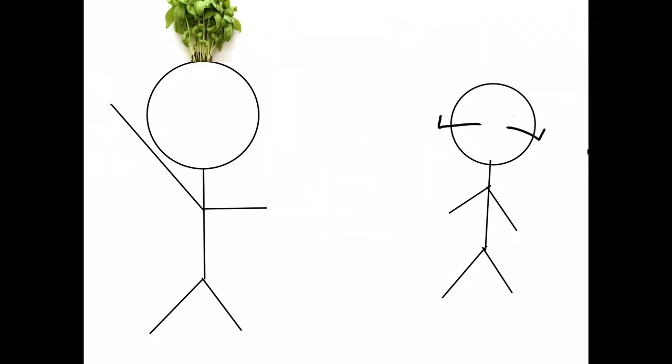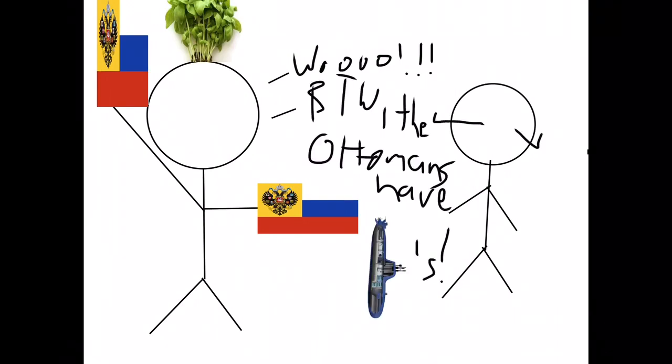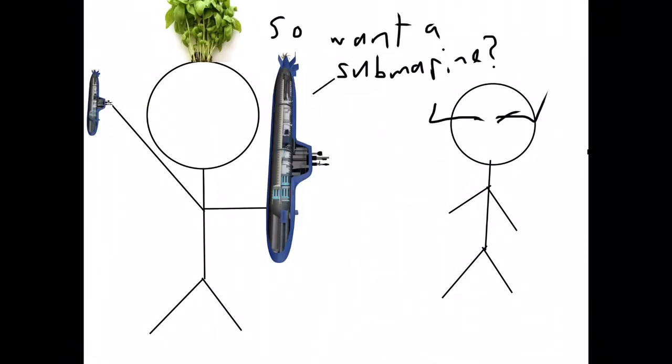Then he went over to the Russians and informed them, as a loyal patriot, that the Ottomans now had some submarines. And they bought some.